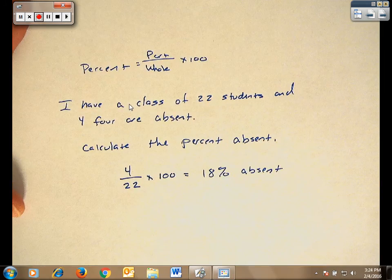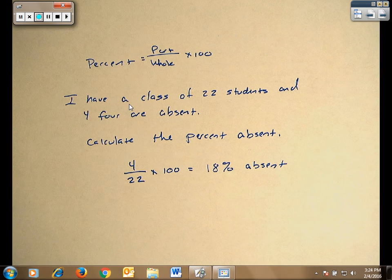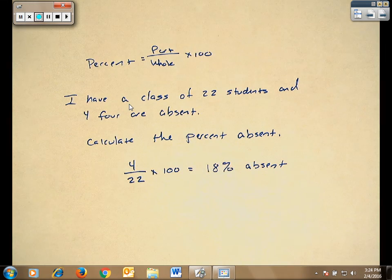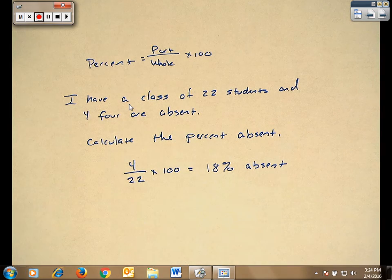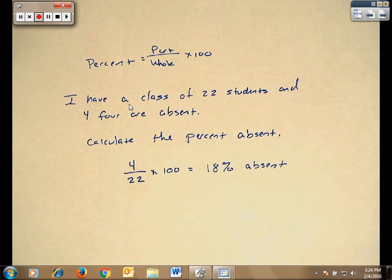And I would be specific when I wrote it down. I would write 18% absent so I know what that percentage is. We want to tell the reader which one it is. We have 18% absent.